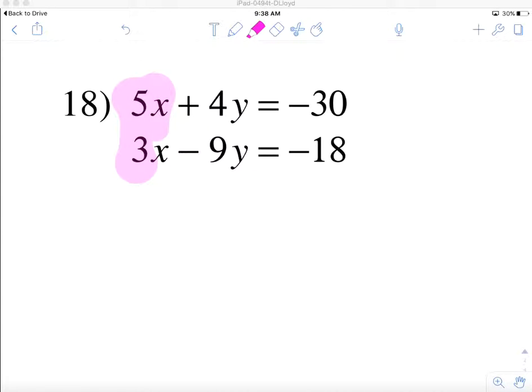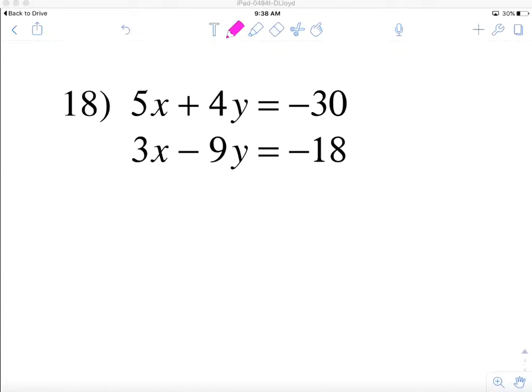So for my purposes, I'm going to focus on a problem like this one with a 5x and a 3x and I'm going to try to turn those into opposites of one another. Now the easiest way to accomplish this task that I've found is this.